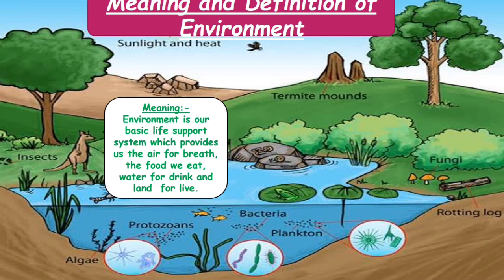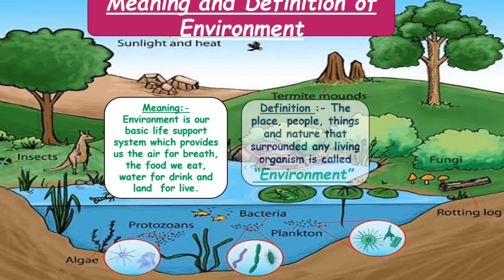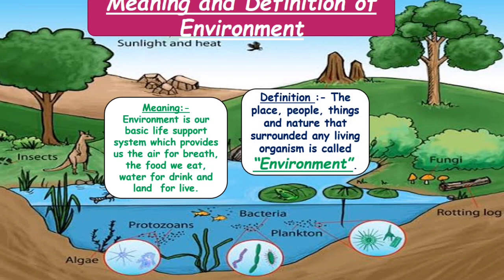The definition of environment: the place, people, things, and nature that surround any living organism is called environment. I repeat — the place, people, things, and nature that surround any living organism is called environment.